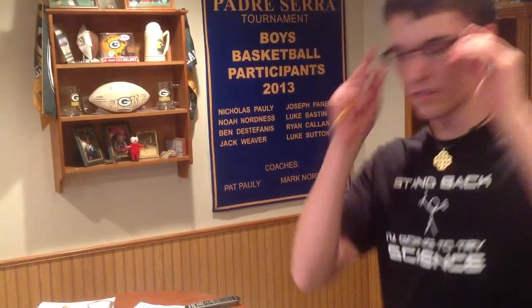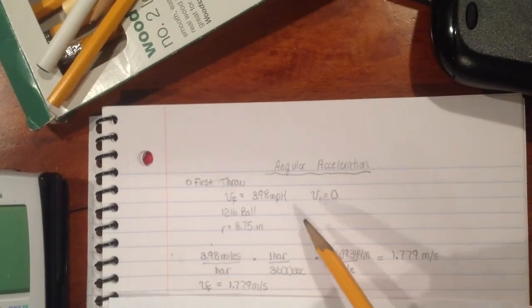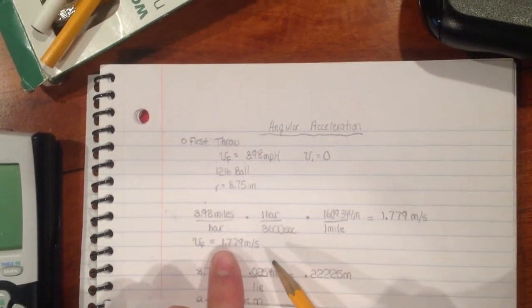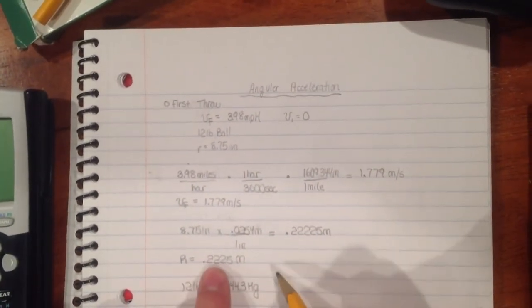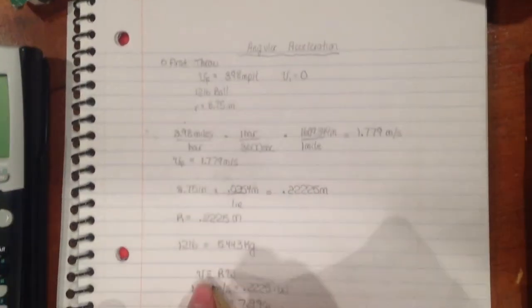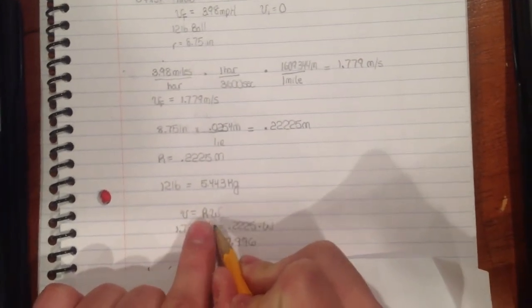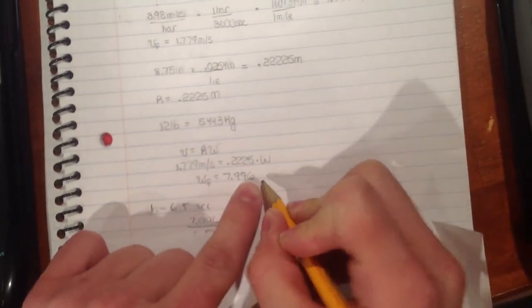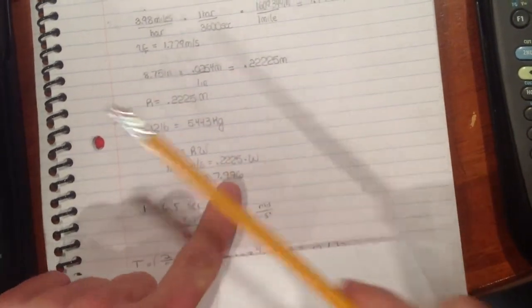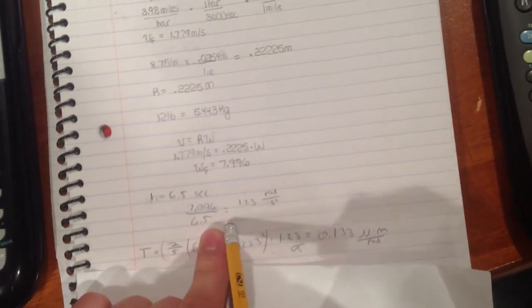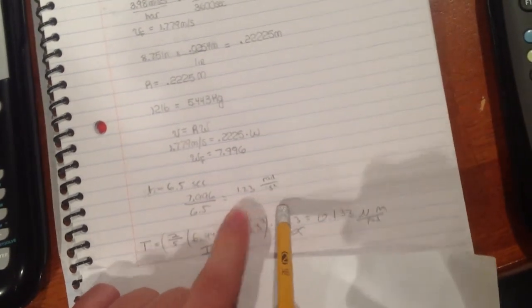Stand back. I'm going to try science. Here we are. We are converting the numbers. The bowling ball had a velocity of 1.779 meters per second, and we converted the radius to meters so we had sufficient units. Once we had the velocity, we converted it to angular speed using the radius. The final angular speed was 7.996 radians per second. Once we had that and we found the time using the video, we found the acceleration to be 1.23 radians per second squared. How nifty.